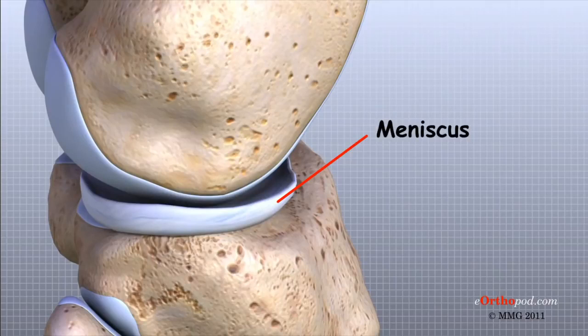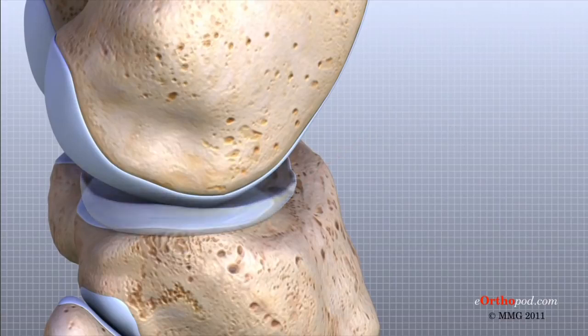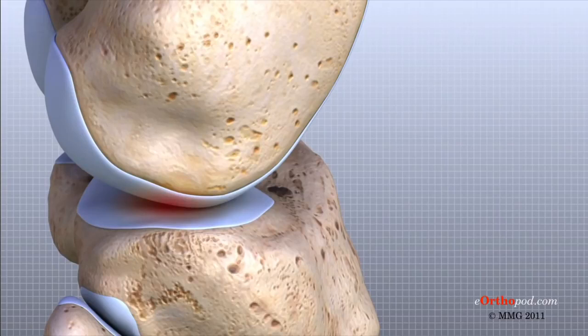Weight distribution by the menisci is important because it protects the articular cartilage on the ends of the bones from excessive forces. Without the menisci, the concentration of force into a small area on the articular cartilage can damage the surface, leading to degeneration over time.